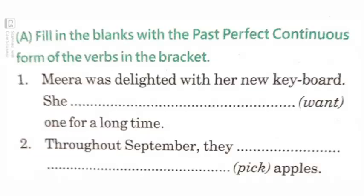Now let's do another exercise: fill in the blanks with the past perfect continuous form of the verbs in brackets. First: 'Meera was delighted with her new keyboard. She had been wanting one for a long time.' Second: 'Throughout September, they had been picking apples.' So how simple is that!